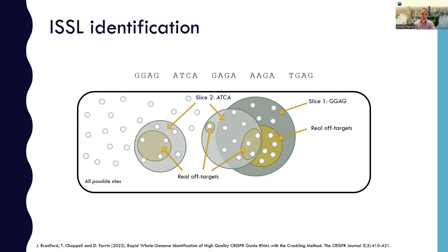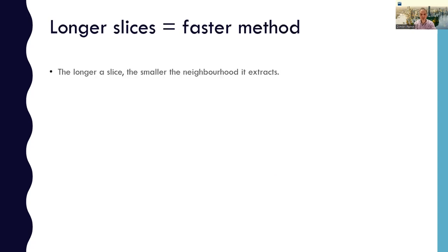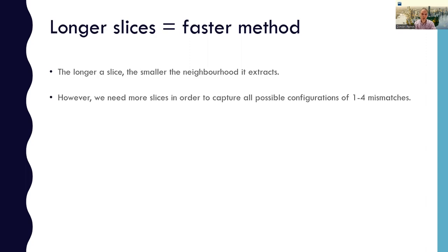Visually, you get a sense of how the method helps us. By forcing exact matches on some bases, we reduce the size of the neighborhood that we need to consider. But because of the 16 bases that are left free to be any base, it's still a very large neighborhood, and so we want to find ways to make that neighborhood even smaller. The longer the slice that we use, the smaller the neighborhood it extracts because it has fewer degrees of freedom. However, the challenge is that we need more slices to be sure that we capture all the possible configurations of one to four mismatches. So we developed a greedy approach that constructs a set of slices that is guaranteed to be valid.